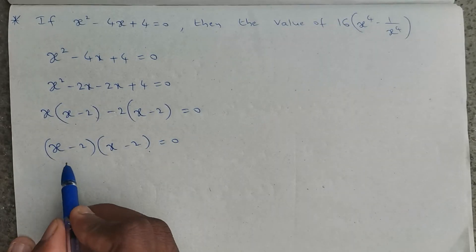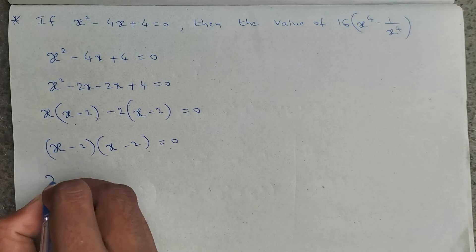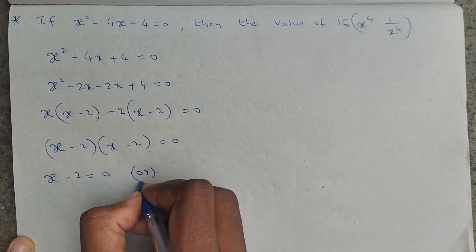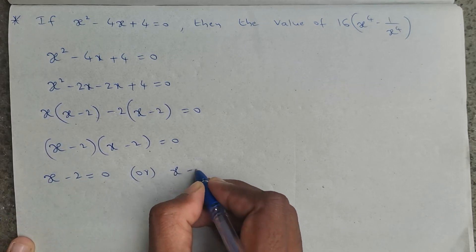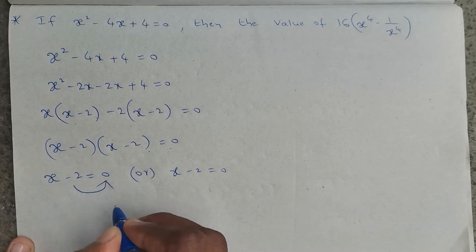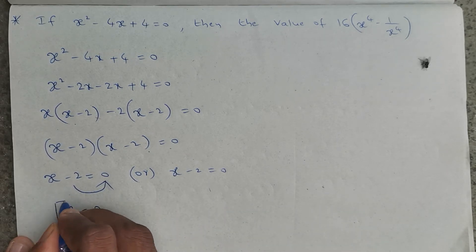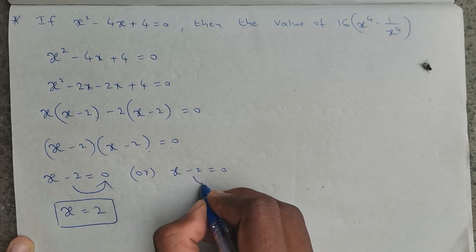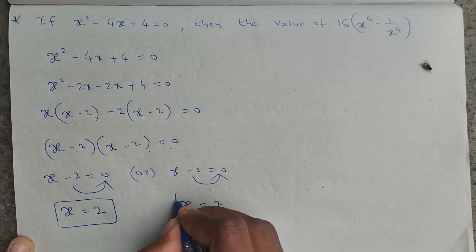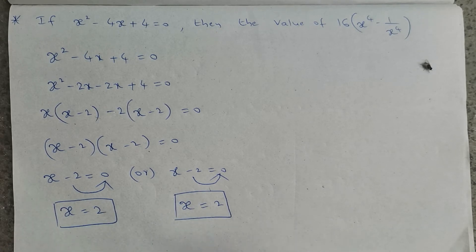Make first factor equals 0 and second factor equals 0: x minus 2 equals 0 or x minus 2 equals 0. Taking minus 2 to the right side it becomes plus 2, so x equals positive 2. Therefore the x value is plus 2.